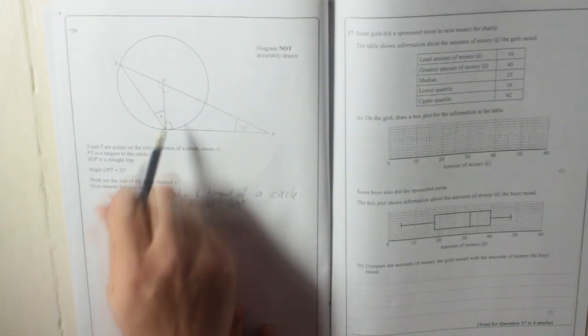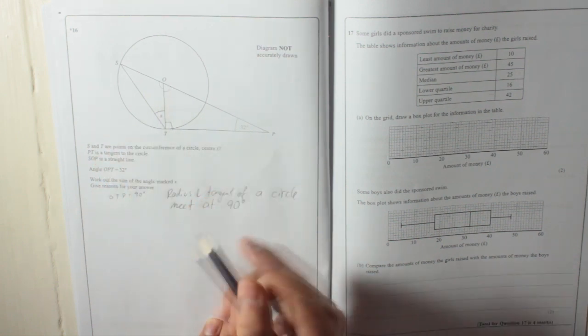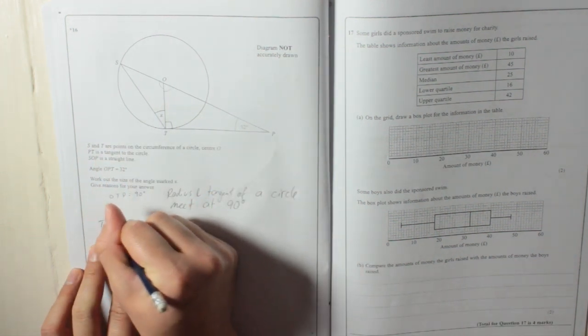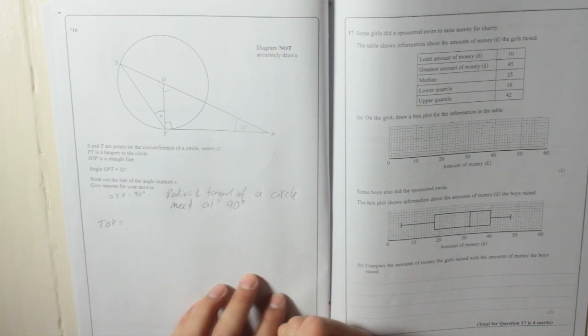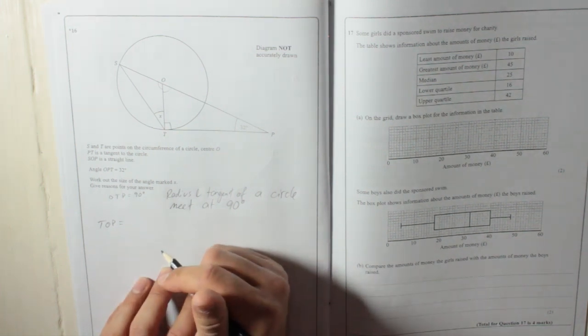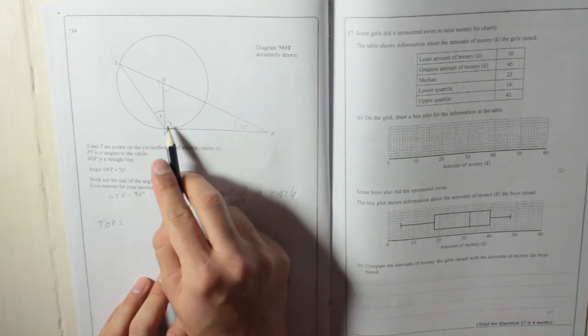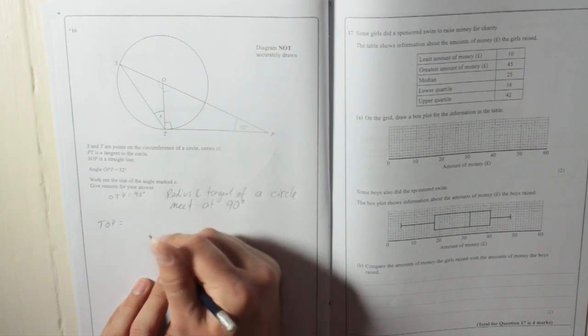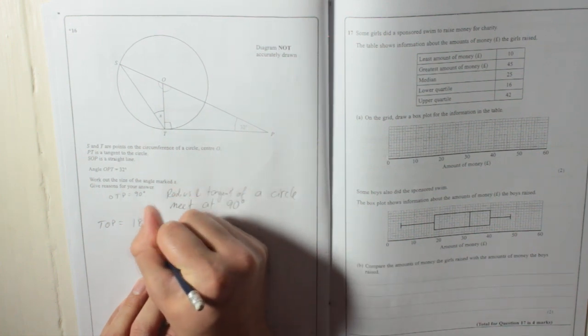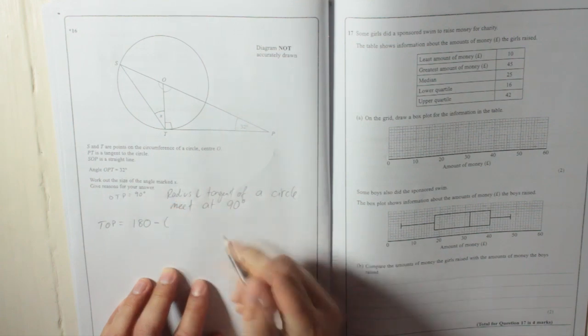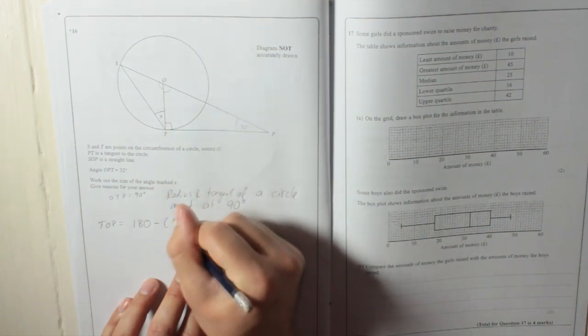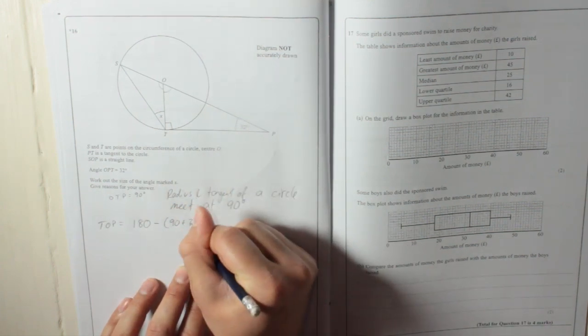So we can find this angle here, T-O-P. T-O-P is equal to those two added together, taken away from 180 degrees. So 180 take away, those two added together, 90 plus 32.